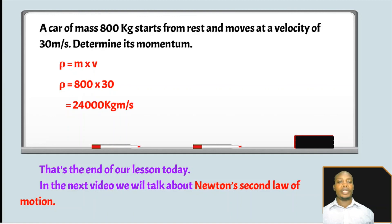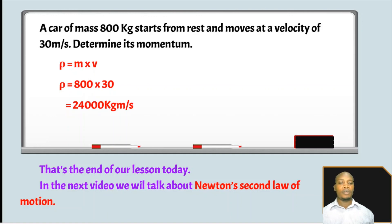Let's work out a numerical example. A car of mass 800 kilograms starts from rest and moves at a velocity of 30 meters per second. Determine its momentum. The first thing you do is write the formula. We've been given mass = 800 kg and velocity = 30 m/s. If you multiply 800 by 30, you get 24,000 kilogram meters per second.